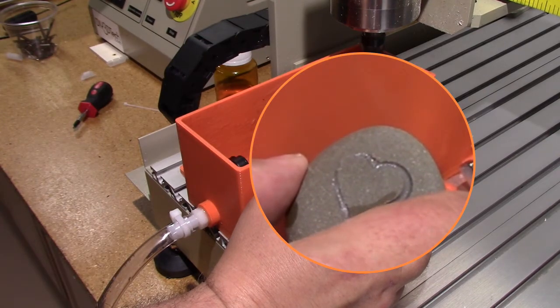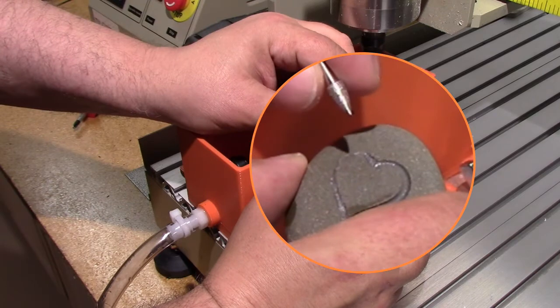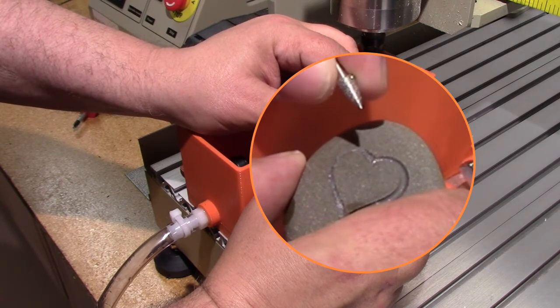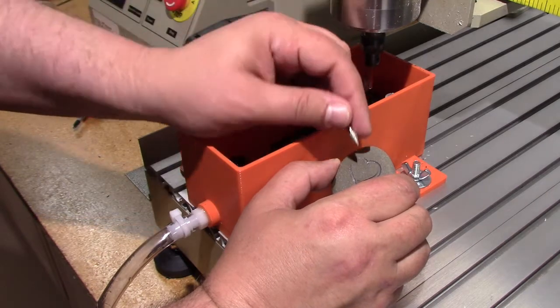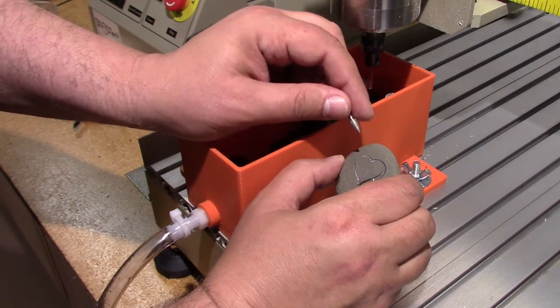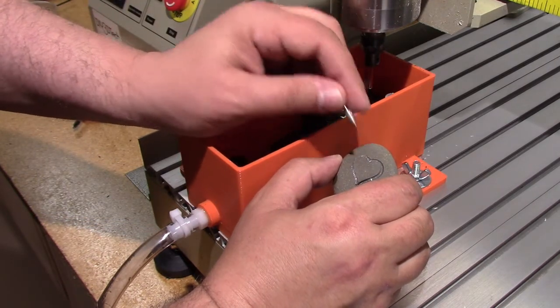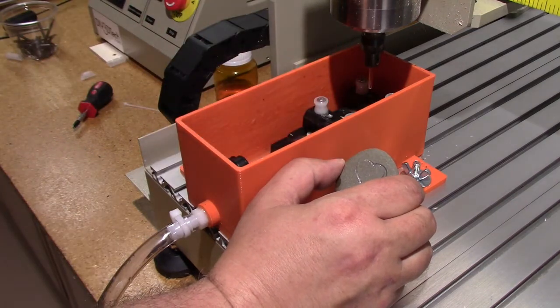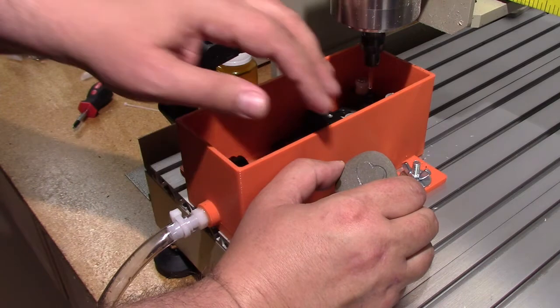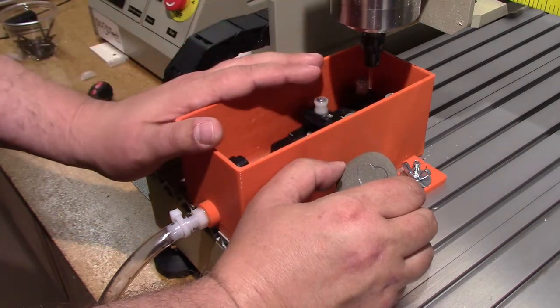I also think utilizing something with more of a tip like this would work out better to engrave rather than the ball joint. Anyways I thought this was kind of interesting. I wanted to share this with you guys because if you have a CNC or whatever, this is something interesting.